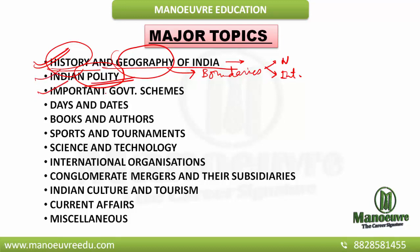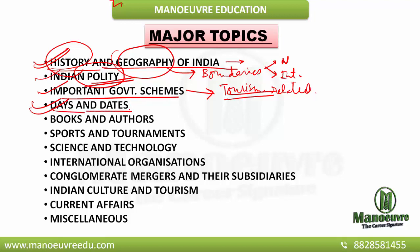Next topic comes the important government schemes. They can ask you some important government schemes with respect to tourism. Next comes days and dates — these are very factual, so you will have to put in more effort to remember them. For example, they can ask you about the International Yoga Day, which is celebrated on 21st of June every year.